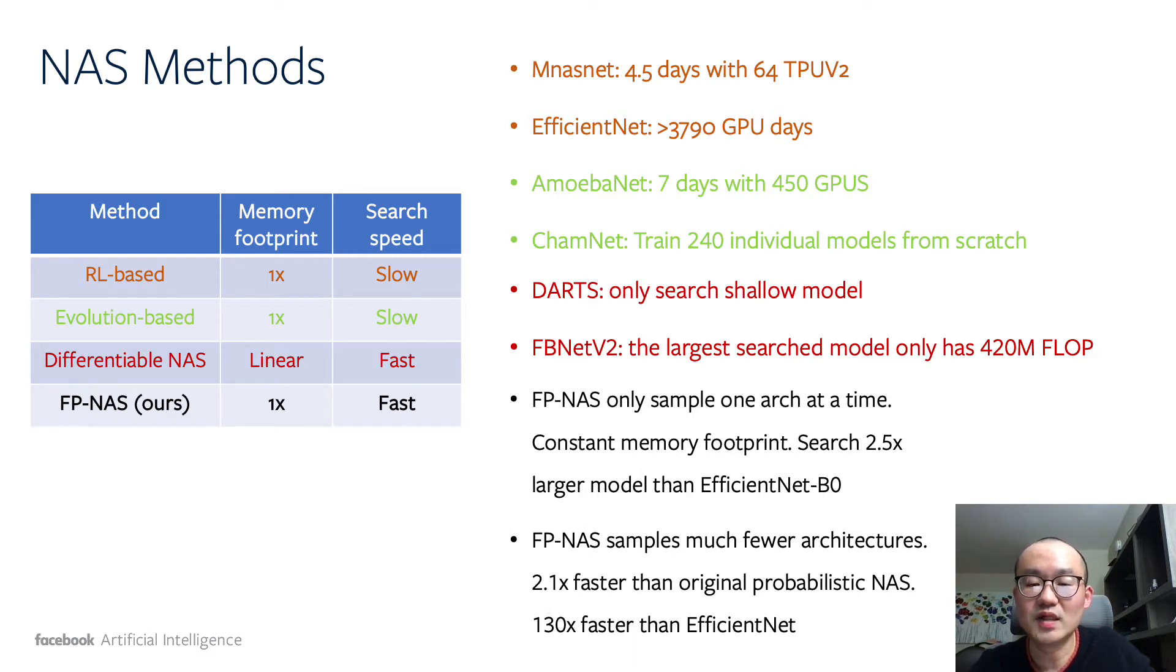Reinforcement learning-based methods are often slow, as they need to generate and evaluate thousands of individual models. Evolution-based approaches are also slow, as hundreds of models will be evaluated during the evolution process.